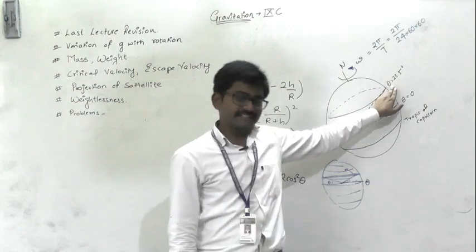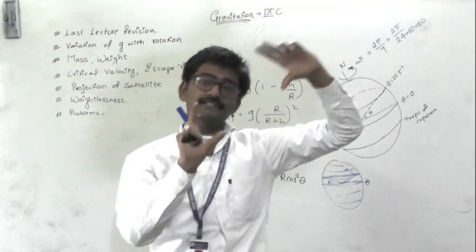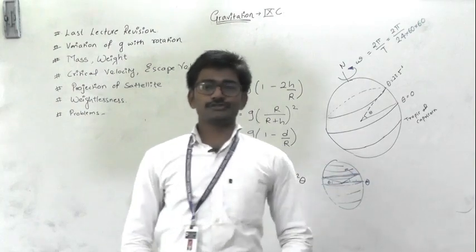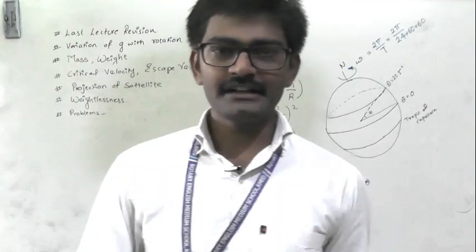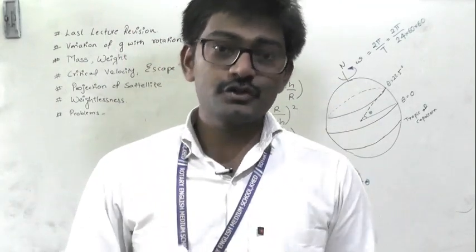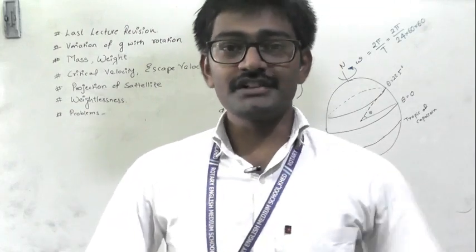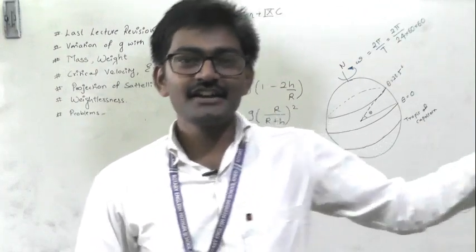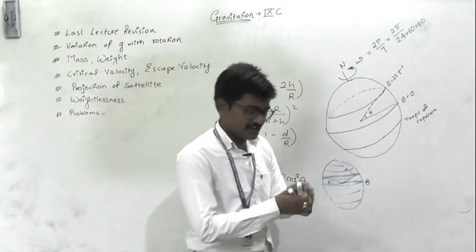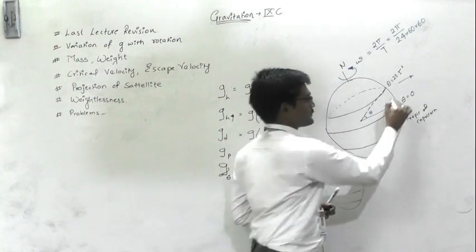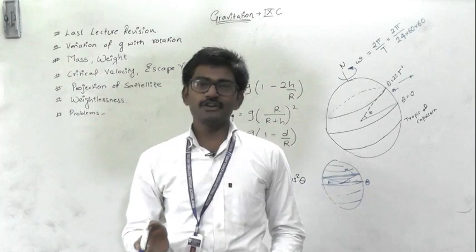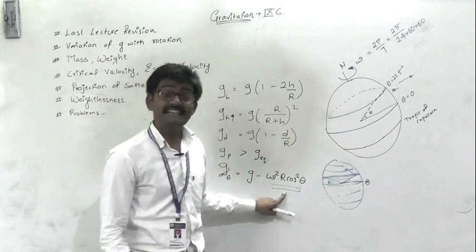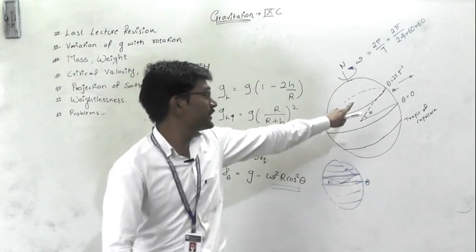As the Earth rotates very fast, due to centrifugal force, a body on the Earth tends to be thrown outward. When thrown outward, its effective weight is reduced because the centrifugal force is acting away from the center while gravity pulls it towards the center. So the net value of g reduces. This reduced value is given by a formula involving cos²θ — the component representing the centrifugal force acting at that particular latitude.